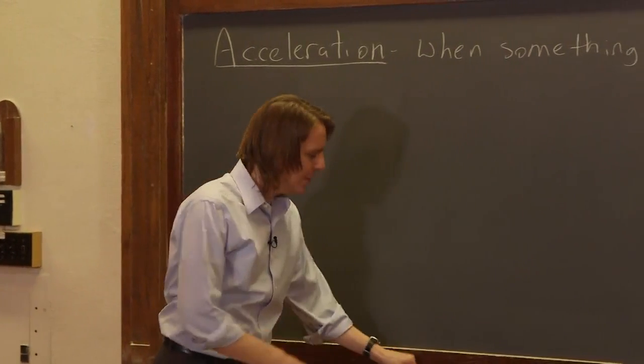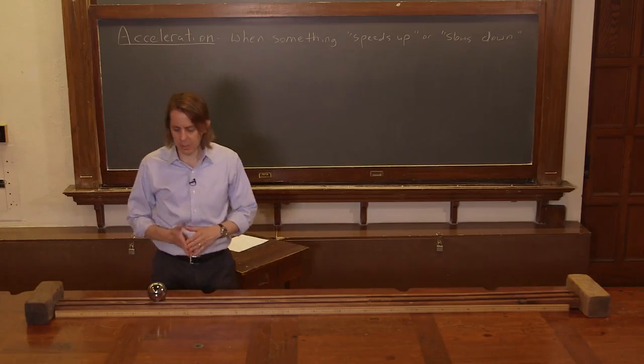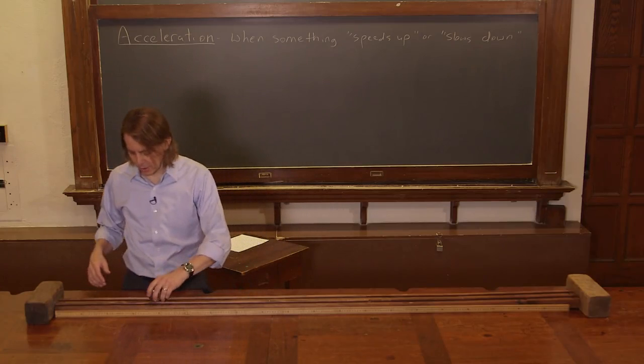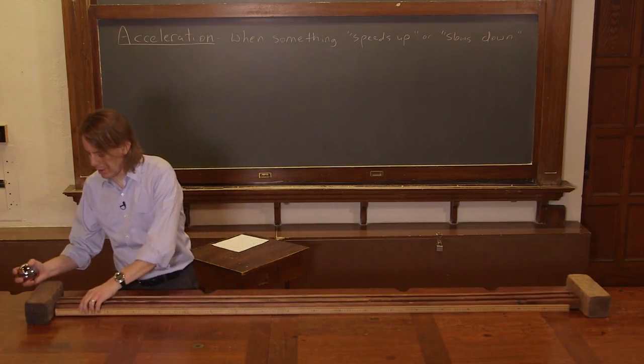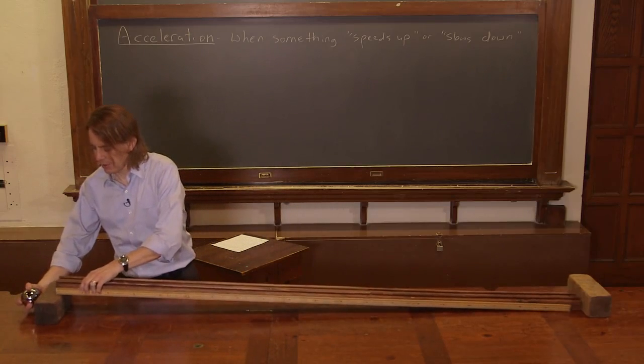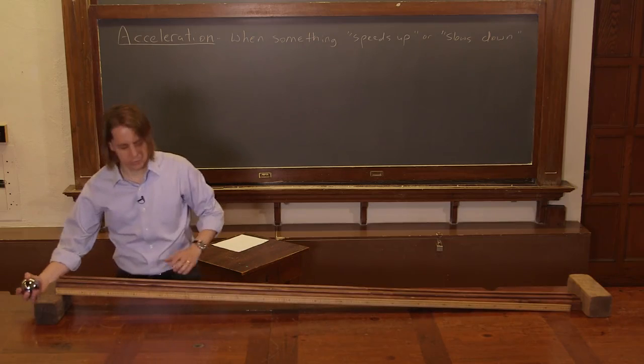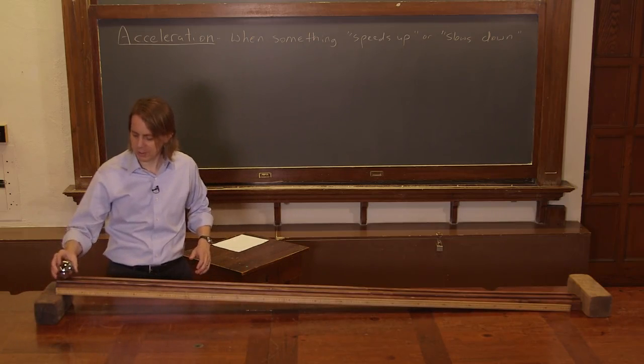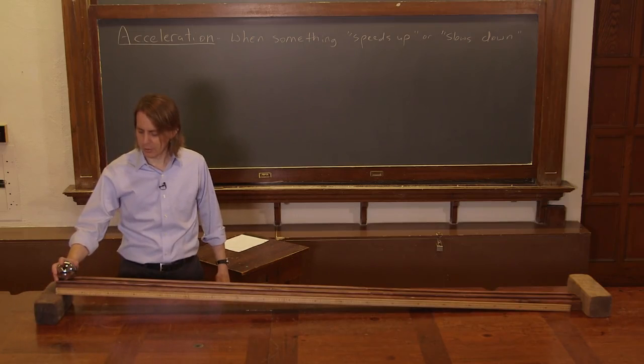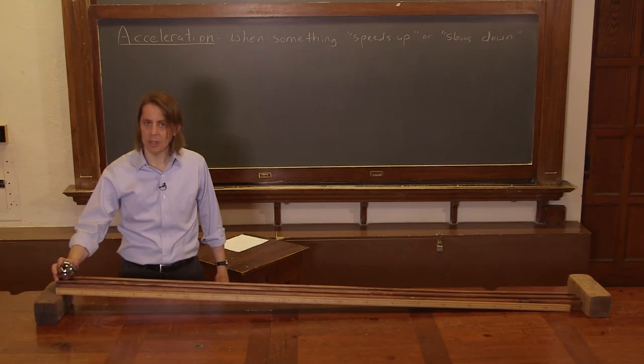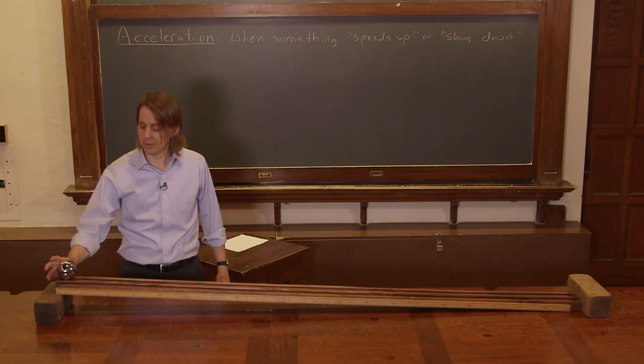So how do we make that happen? Well, let's come over here to our track and lift one side of the track. As you know, things like to roll downhill. So if we lift one side of the track and put the ball at the origin and release, right when I release it, the velocity will be really slow, but then it'll speed up.